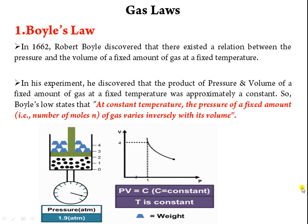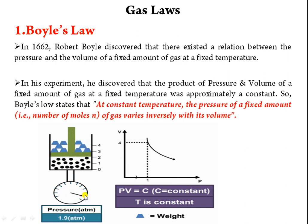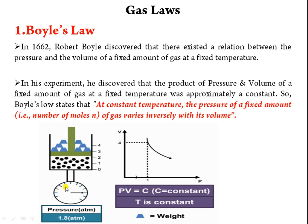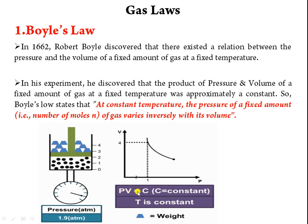Looking at this diagram: as the piston moves inward, gas molecules get less space and pressure immediately increases. Initially the pressure is 1 atmospheric pressure, and as you move the piston downward, the pressure goes on increasing. The product of pressure and volume equals a constant C, where temperature and number of moles are constant.